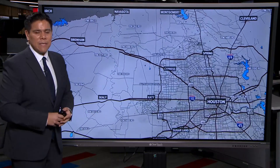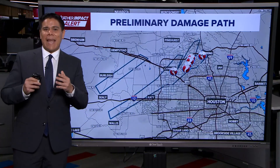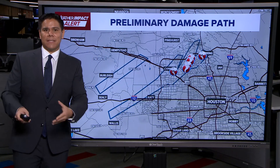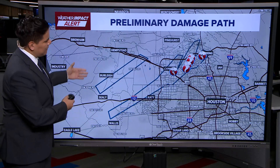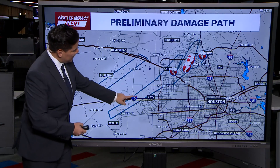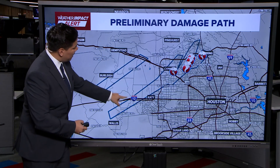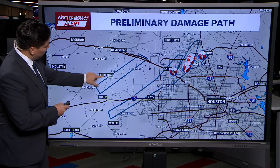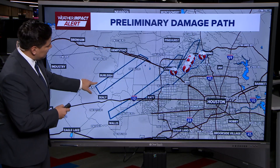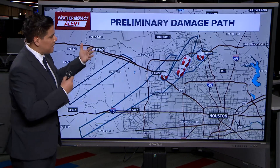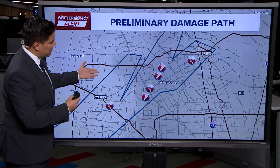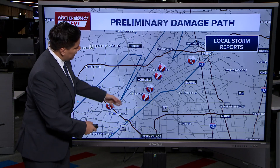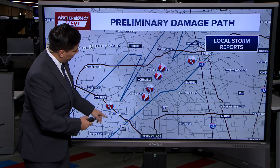Looking at the preliminary damage path with this system we saw today, it started out near the I-10 area. There have been some damage signatures reported north of Sealy — that has been unconfirmed — but the significant damage we saw was inside this navy blue polygon in and around the Klein area.